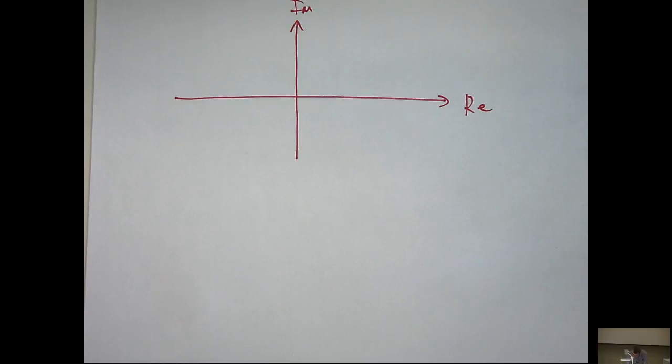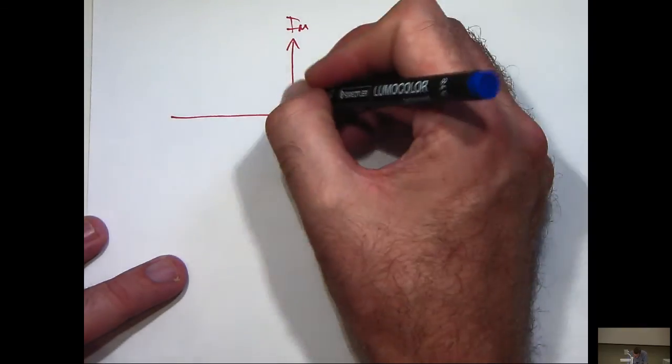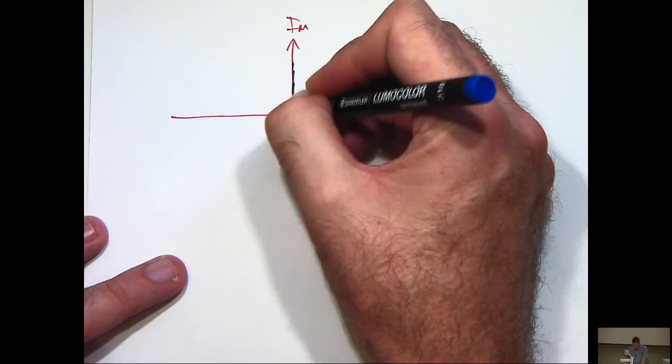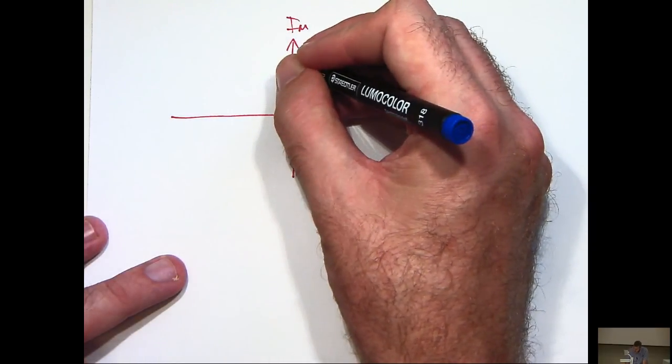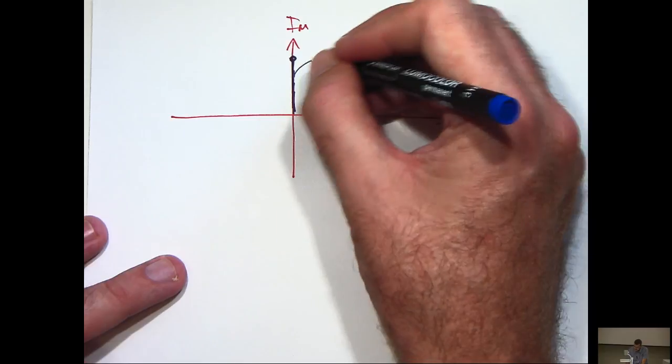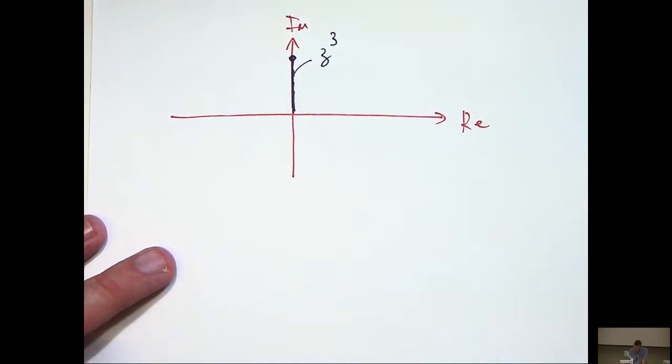Okay, so firstly, we want to plot 8i on there, so it's going to be along the imaginary axis, the positive imaginary axis, and this is actually z³.